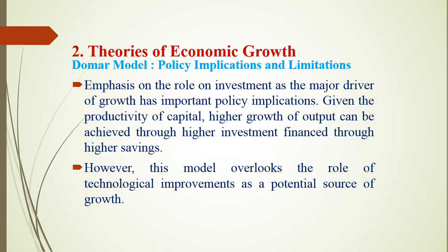The Domar model has important policy implications and limitations. The first policy implication is that it emphasizes the role of investment as a major driver of output growth — if the productivity of capital remains constant, higher growth can be achieved only through higher investment financed through higher savings. However, this model also overlooks the role of technological progress as a potential source of growth. Due to the fixed coefficient technology assumed, the model has a problem of instability: once the economy deviates from equilibrium, it never automatically returns to equilibrium.